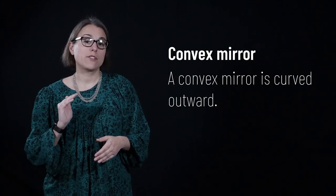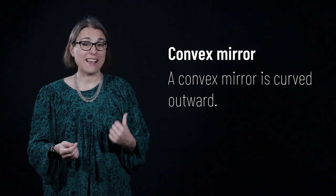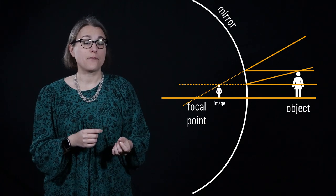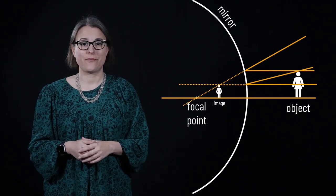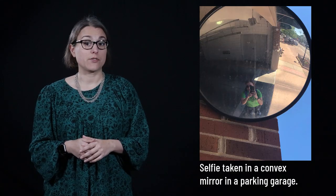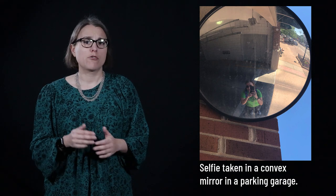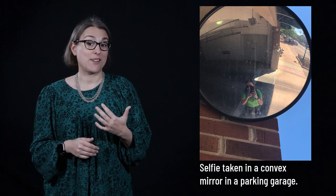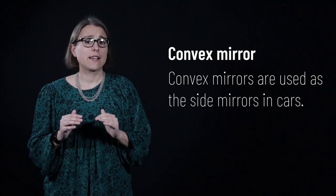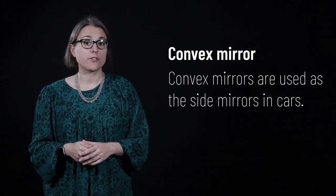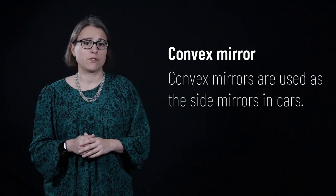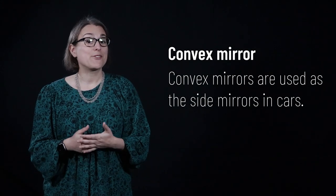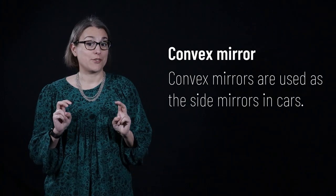A convex mirror is a mirror that's curved outward. The focal point is behind the mirror. When we analyze the light rays, we see that the object creates a virtual image behind the mirror that's upright and smaller than the object. There are many applications of convex mirrors — perhaps you've seen them in a parking garage to help you see around tight corners. I took a selfie at a parking garage in downtown Naperville. Convex mirrors are also used as side mirrors in cars, showing a slightly smaller view of what's around us and allowing us to see an expanded field of view — which is why there's a warning that objects are closer than they appear.